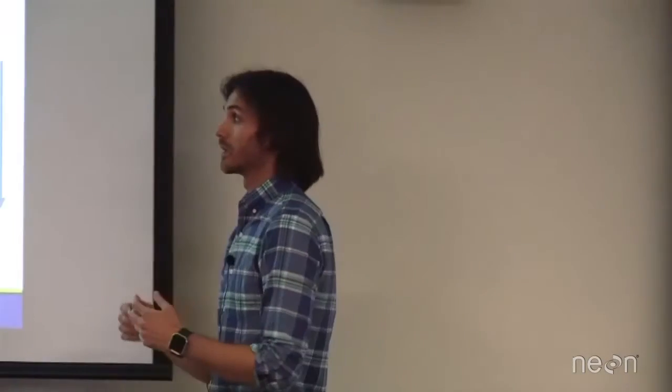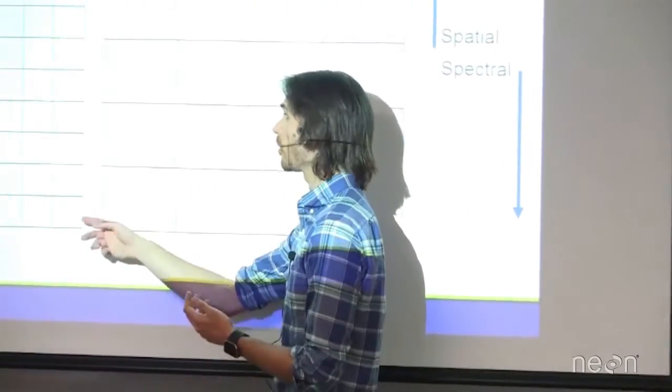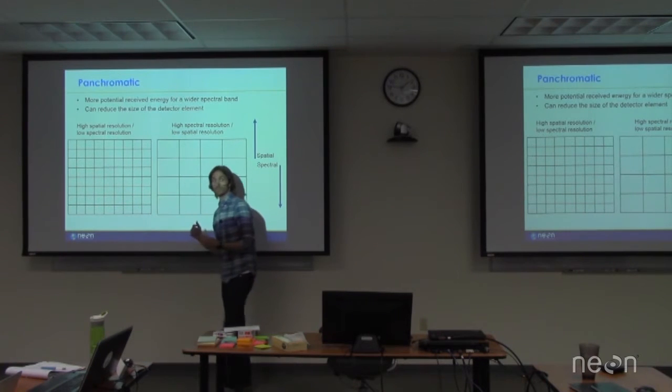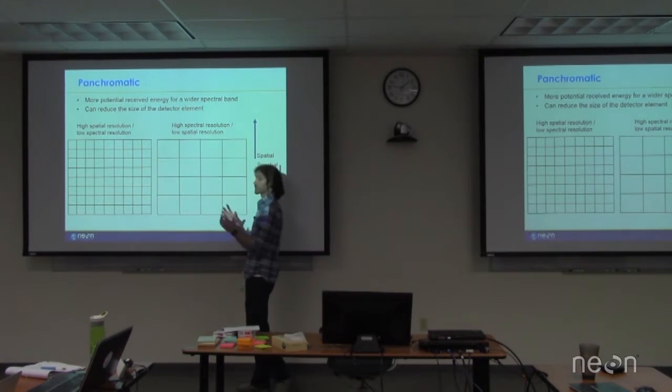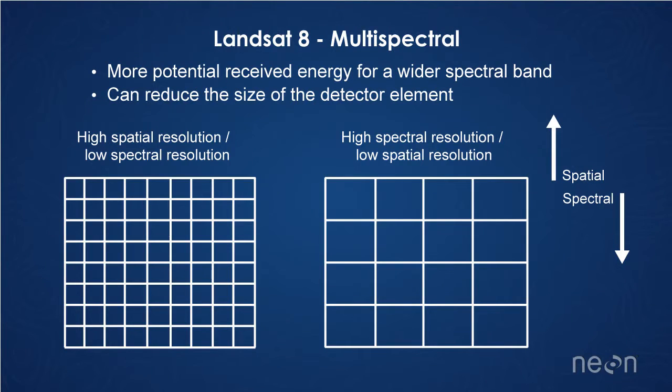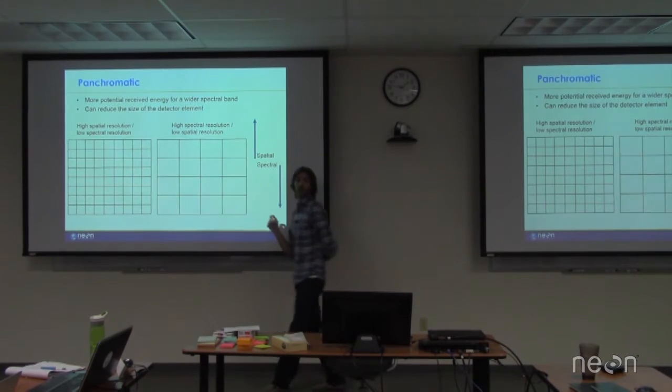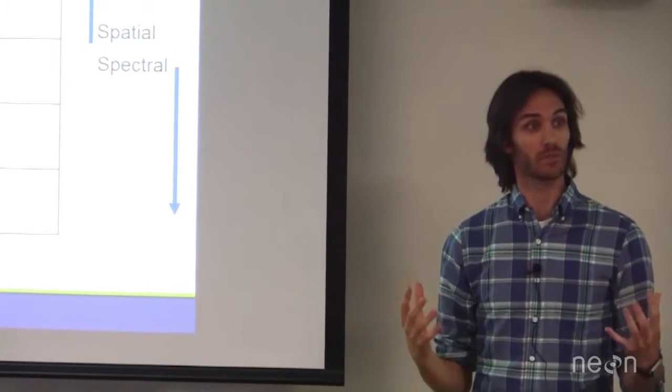If you can think about a CCD array detector, you can make a whole bunch of different elements that detect the energy in each of those individual bands. But the smaller you make them, the less energy that they're going to be able to detect. And so if you want to get a good signal, good strong signal, remember, all these are going to have a little bit of noise in them. So if you want to get a good strong signal, you have two choices.